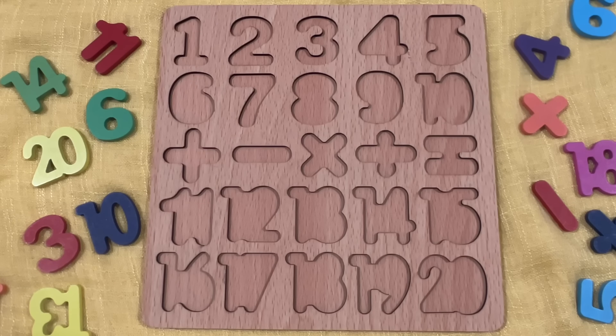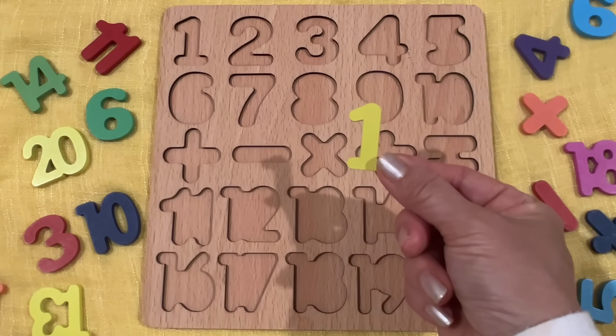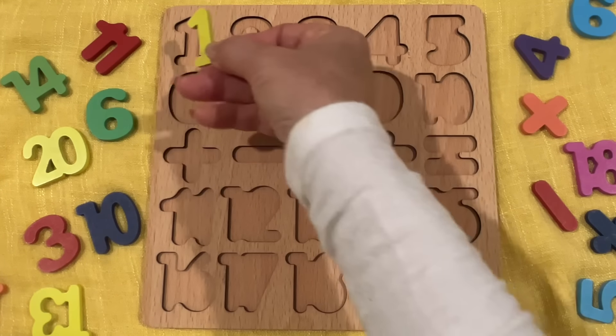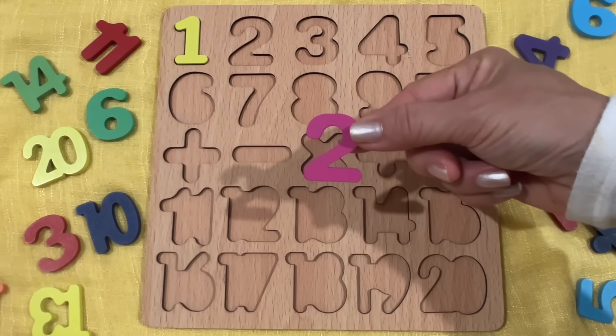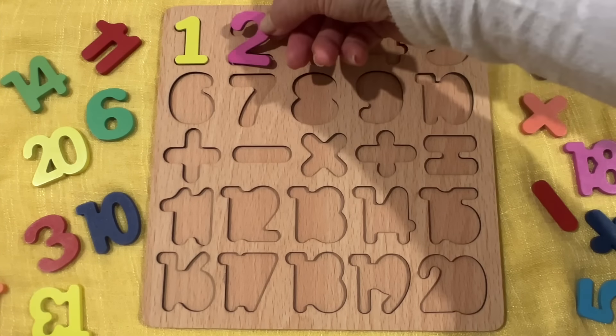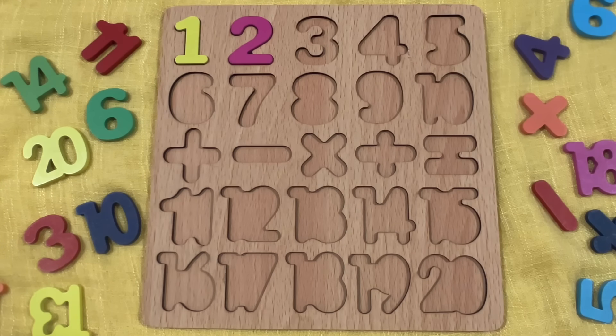The first number is one. One. In English, it's one. In Korean, it's 일 (il). The next number is the number two. Two. In English, it's called two. In Korean, we call it 이 (i).